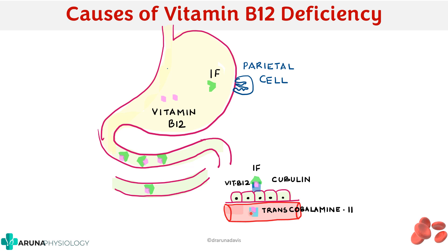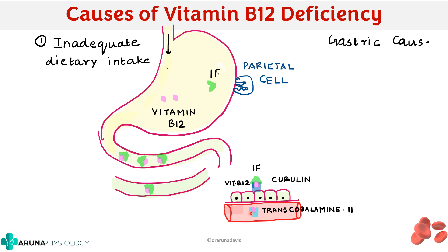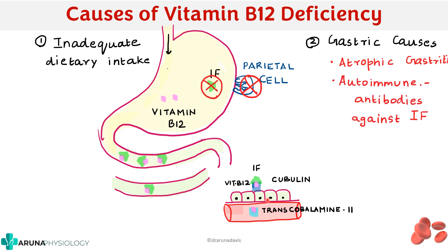What are the causes of vitamin B12 deficiency? Decreased dietary intake will obviously cause deficiency. There are also gastric causes — for example, atrophic gastritis, where there are decreased parietal cells and thus decreased intrinsic factor. There are also autoimmune conditions with antibodies against intrinsic factor, and finally gastrectomy, where there are no parietal cells and therefore no intrinsic factor. These are the different gastric causes of vitamin B12 deficiency.